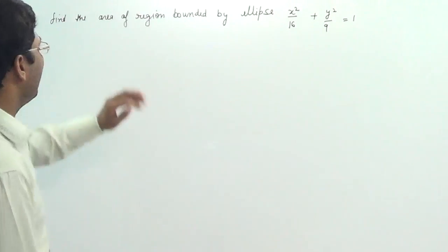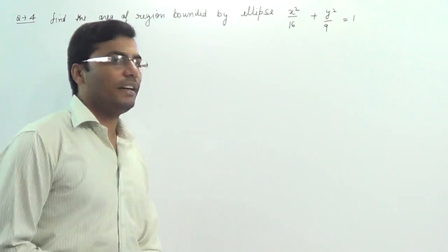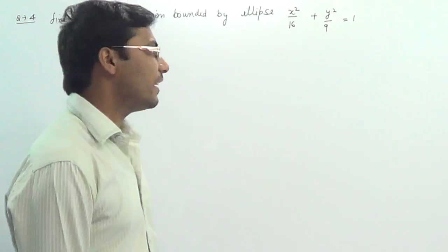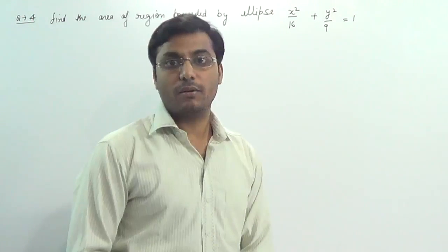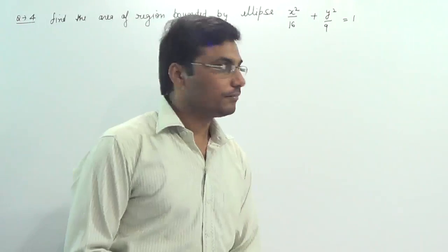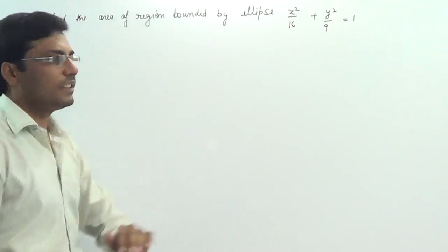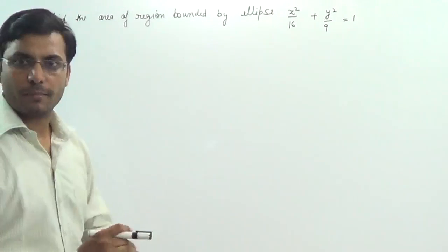Find the area of the region bounded by the ellipse x² divided by 16 plus y² divided by 9 is equal to 1. We know that this is the equation of an ellipse as given in the problem.